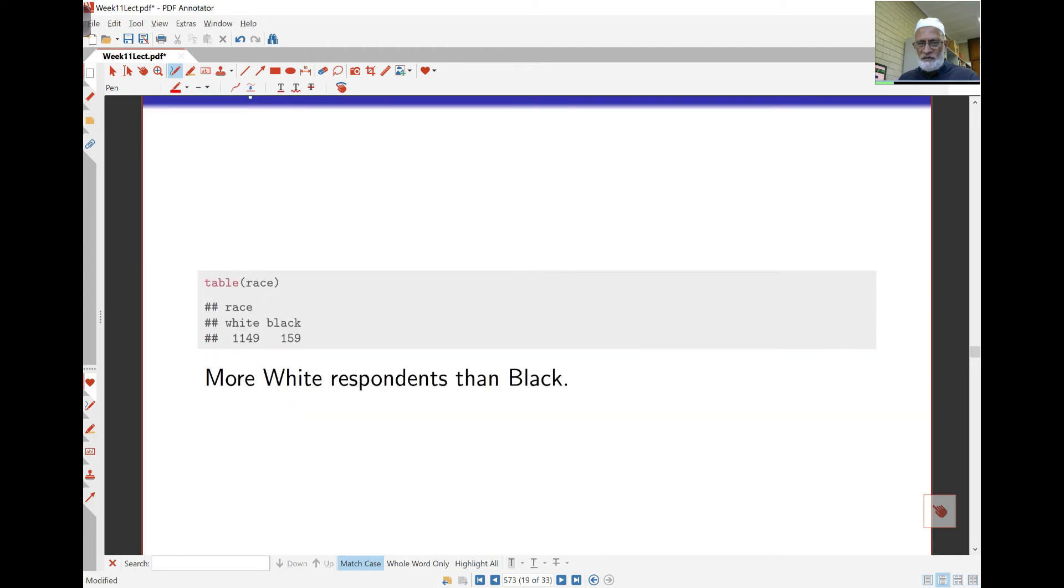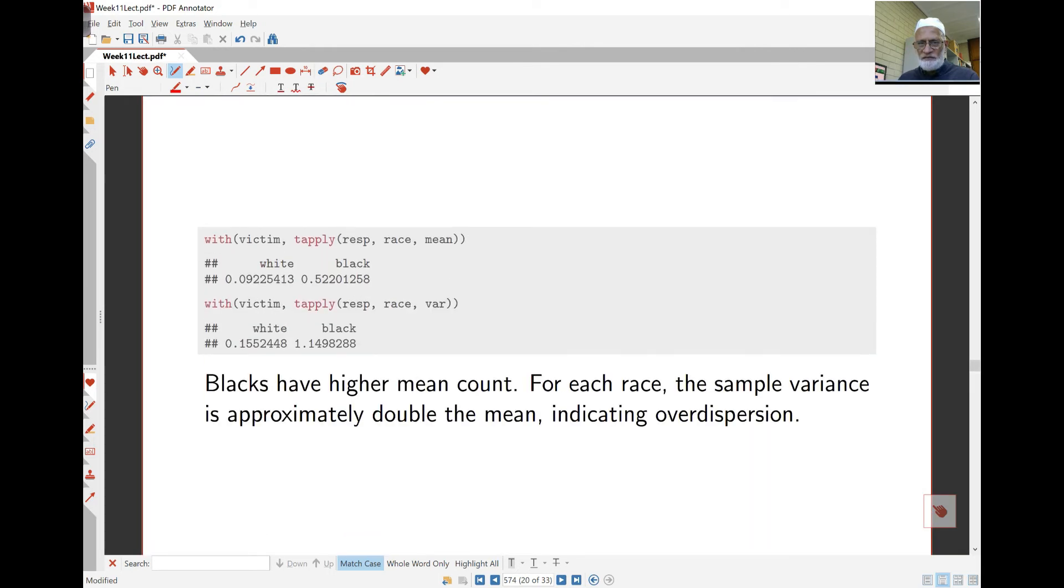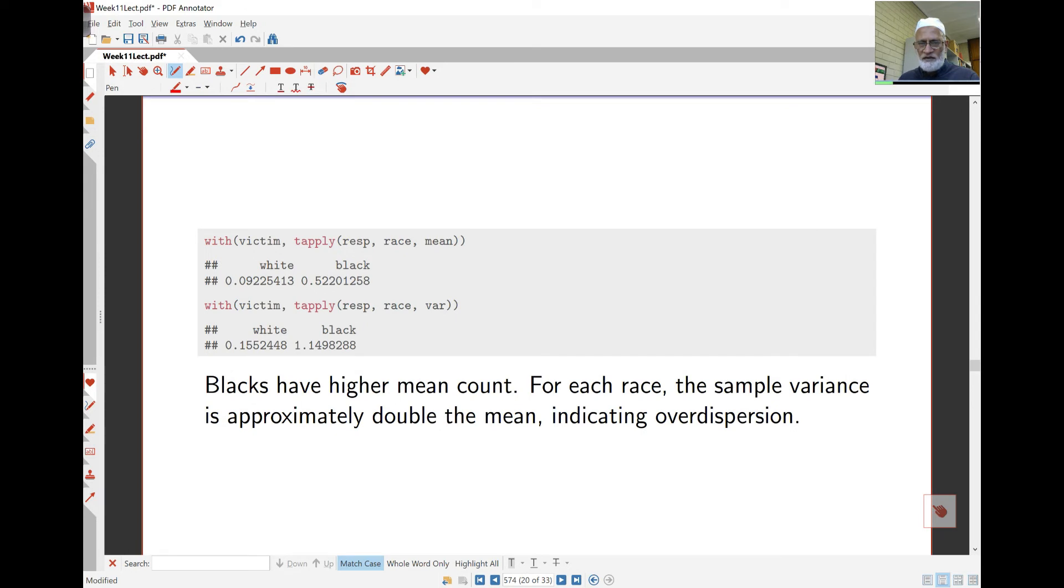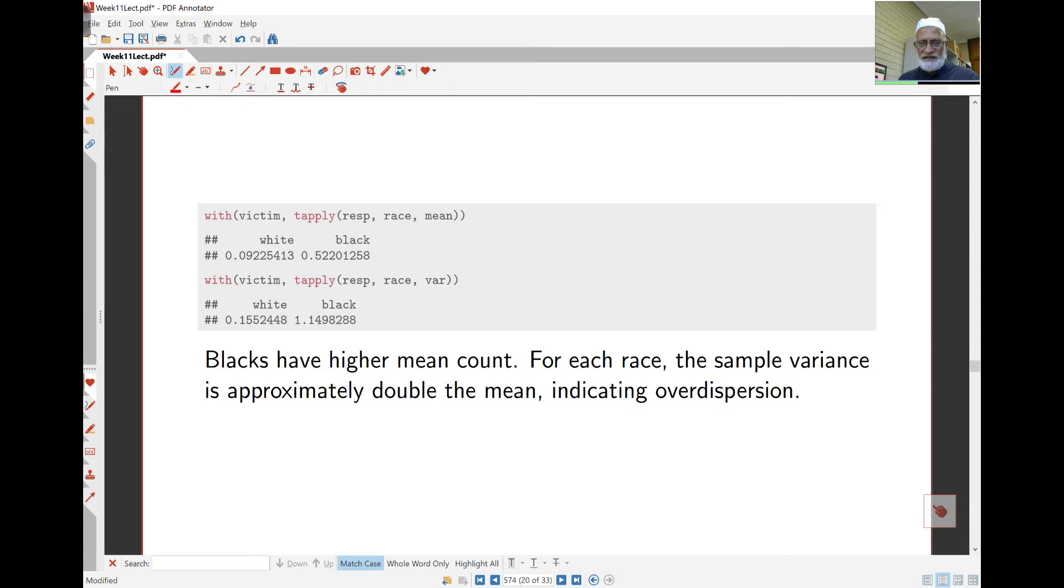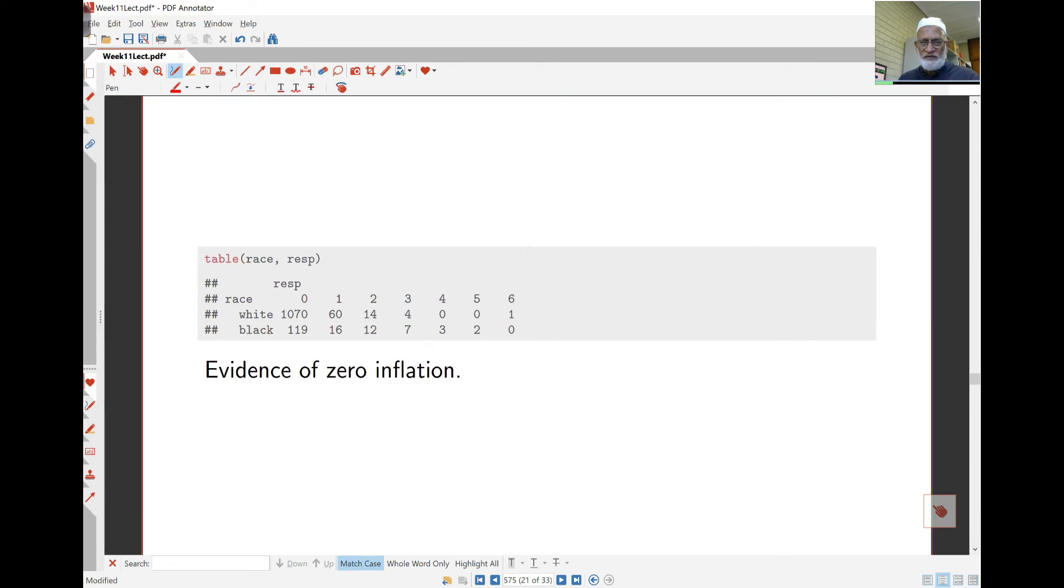And you can look at the data. As far as white black victims could be concerned, you'll see there are more white respondents than black respondents. The mean number of homicide victims that blacks know is 0.5 compared to about 0.09 for the whites, much much higher for the people of black color. And as far as the variance is concerned, the variance is different for the two races, which means you certainly expect here to be some over-dispersion. And there certainly is evidence of zero inflation here, lots more zeros here than you expect to see under a Poisson model.